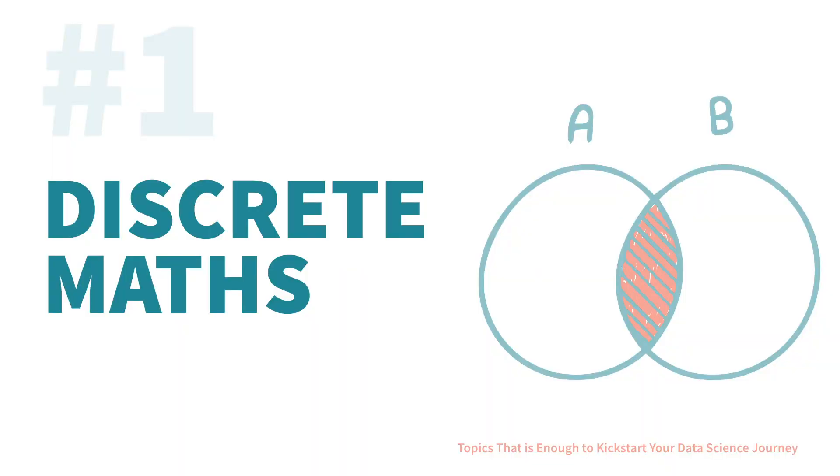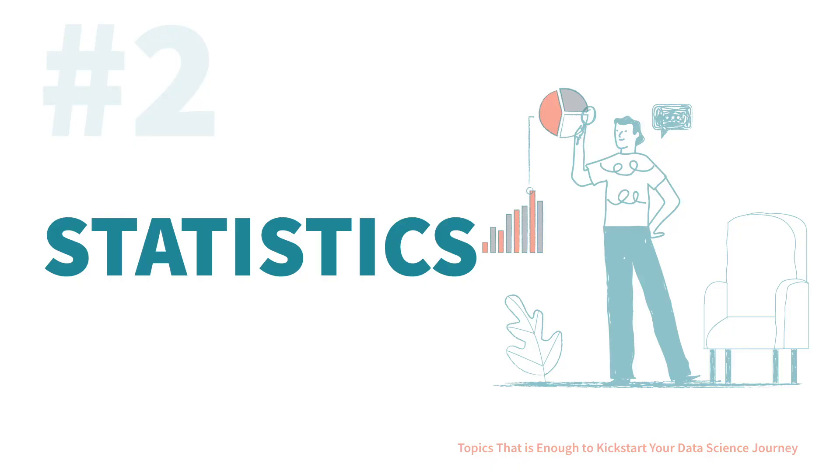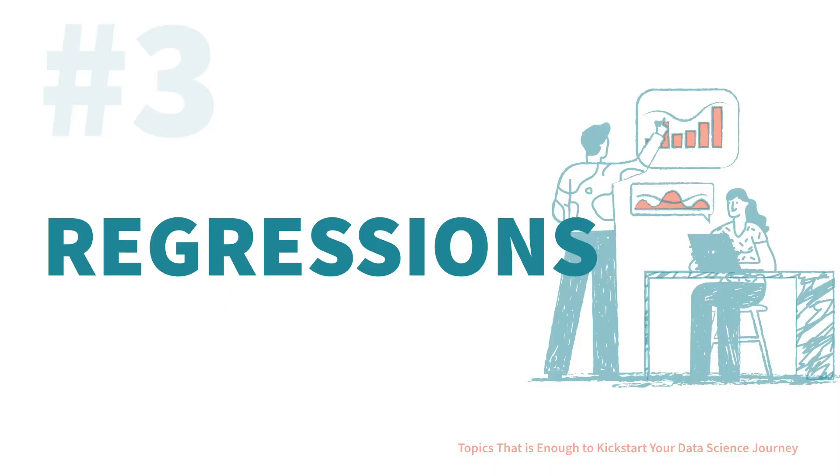Here are some mathematics and statistics topics that are enough to kickstart your data science journey. First, learn discrete math. Discrete math is not as hard as it sounds — it's basically the foundation of data science and computer science. Learn how to count objects, calculate combinations, permutations, and probabilities. Second, learn statistics, which allows us to gain deeper insights into our data and understand its underlying structures, distributions, and patterns. And lastly, learn regression analysis, an important tool for building models — we learn how to fit a curve or line to data points to estimate relationships between variables and build models for predictions.